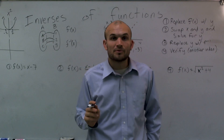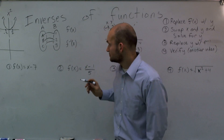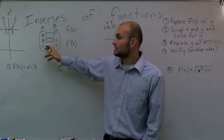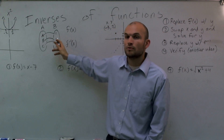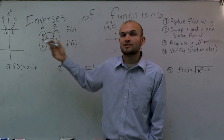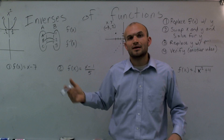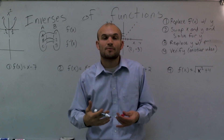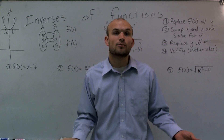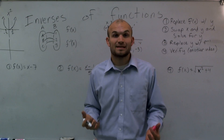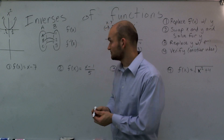However, we have a problem. Since I have two different inputs going to the same output, I'm not going to have a one-to-one relationship. And when I don't have a one-to-one relationship, I cannot find the inverse of the function.